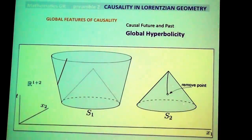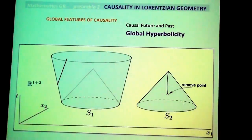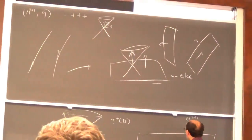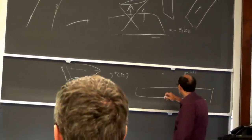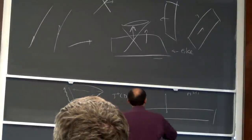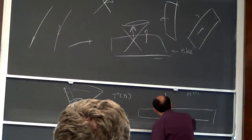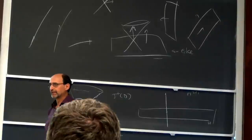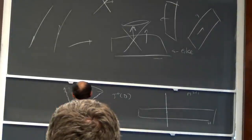Another important concept in general relativity is global hyperbolicity. You can think of it as the analogue of completeness in Riemannian geometry. You have a Lorentzian space and a hypersurface, and every point outside the hypersurface can be joined by a causal curve from that point. In other words, every inextendable causal curve will intersect the hypersurface at exactly one point.